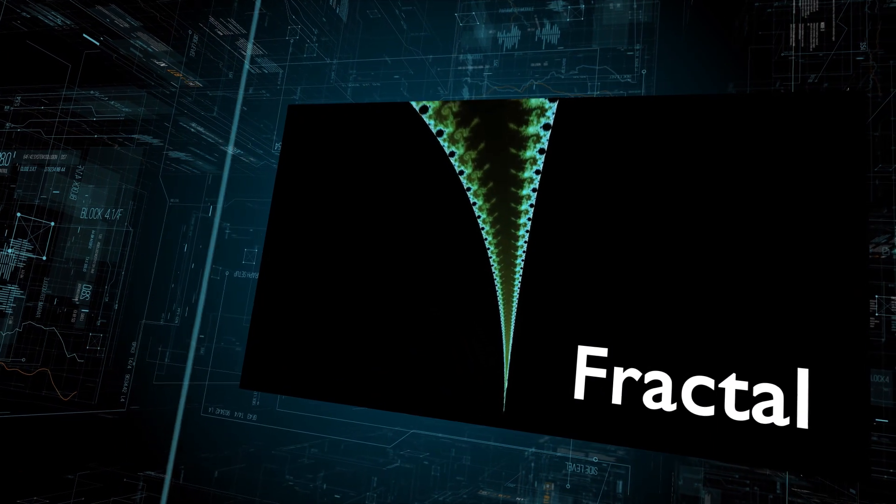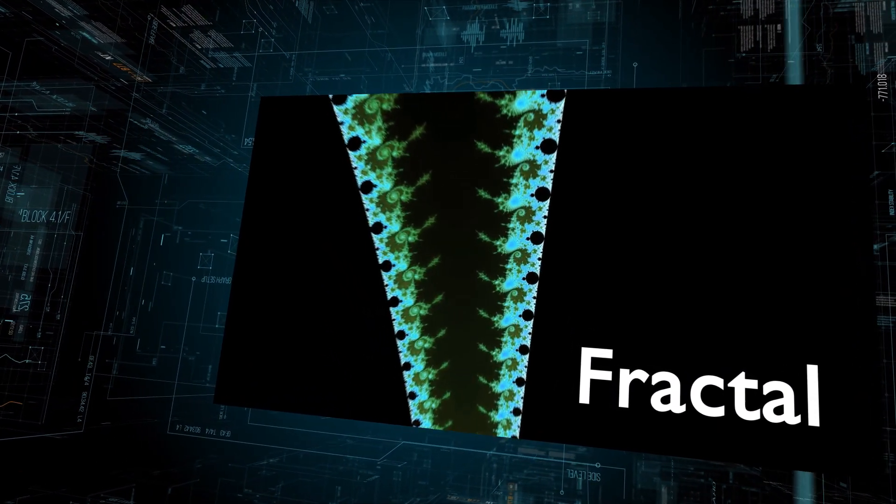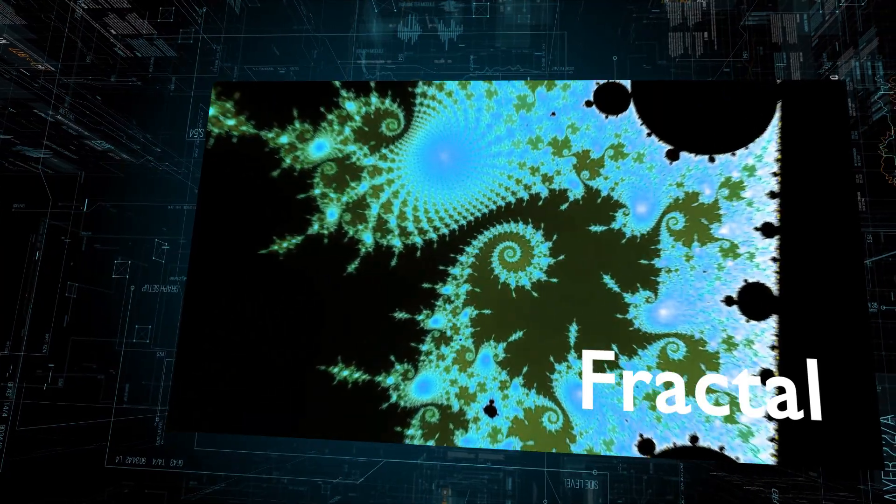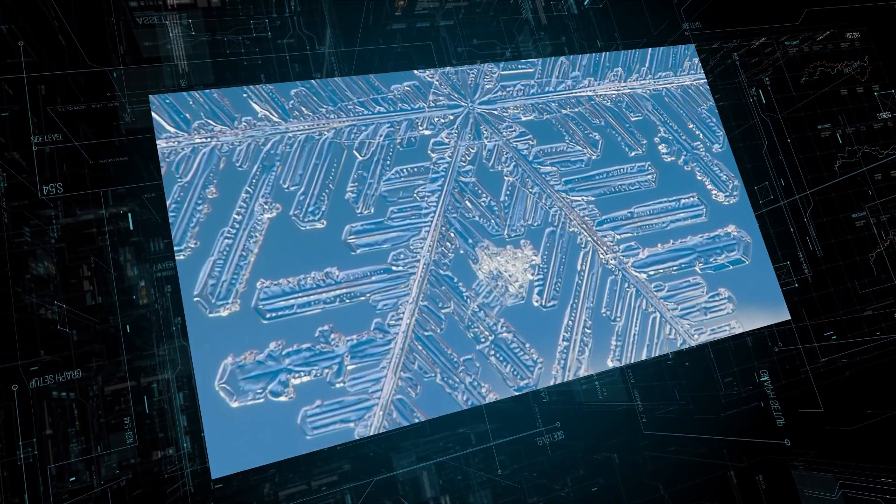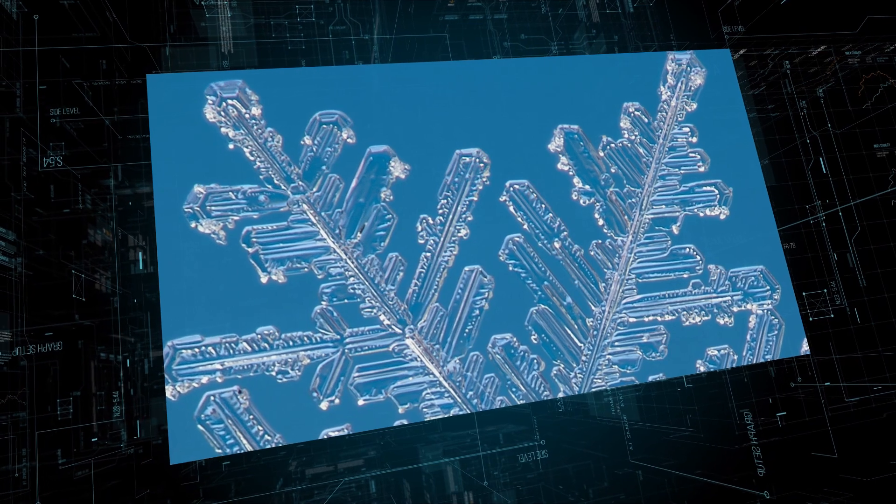This is an example of a fractal, a type of structure that repeats infinitely on smaller and smaller scales. Snowflakes have a fractal quality. How is that possible?